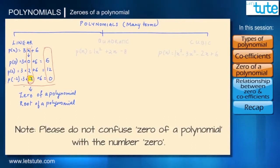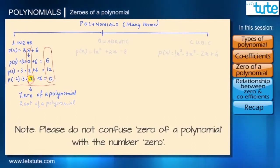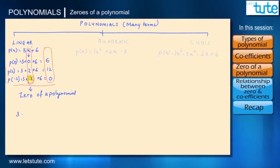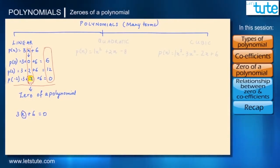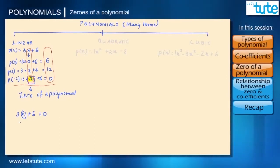So when the polynomial is equal to 0, the value of x at that point — that is minus 2 — is mathematically called the zero of a polynomial or root of a polynomial. Now we know that when we put the polynomial equal to 0, so let's say 3x + 6 = 0, we should be able to get x as minus 2. It's just the reverse process.